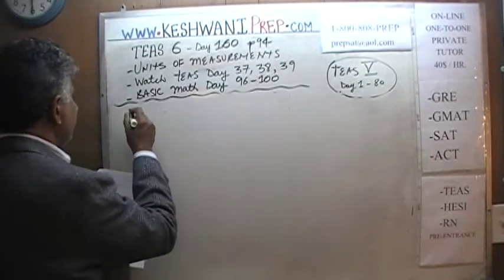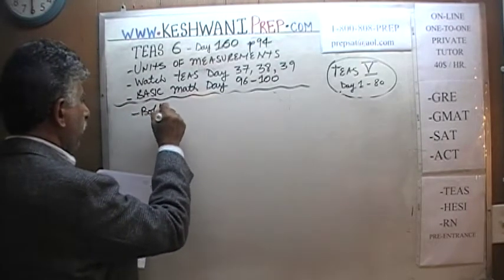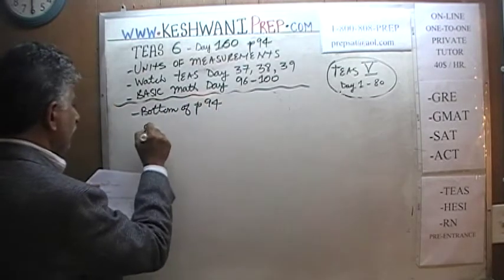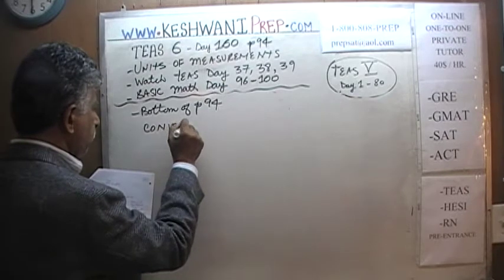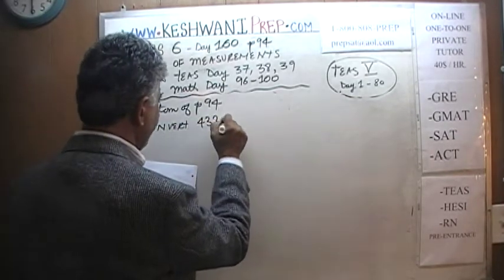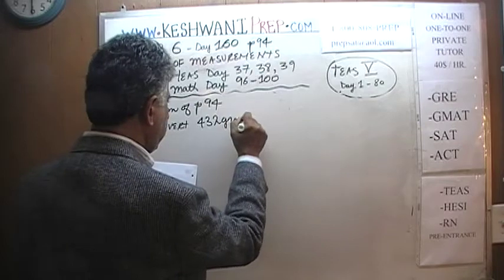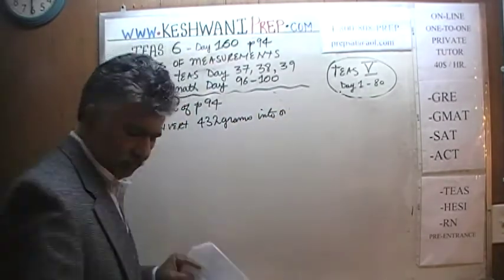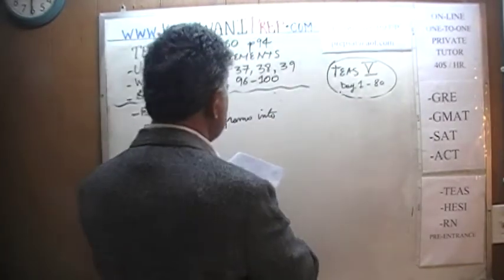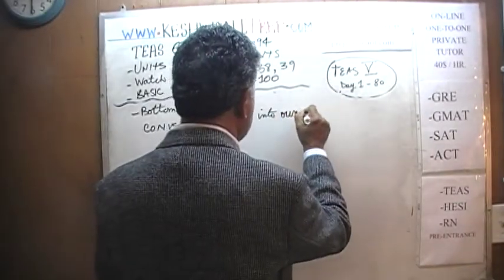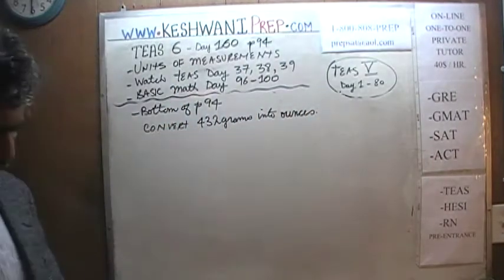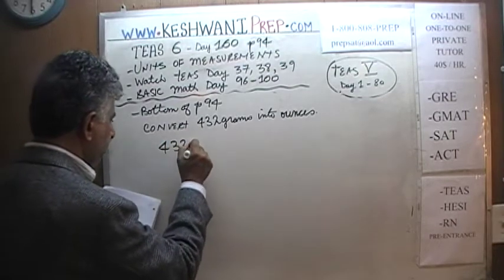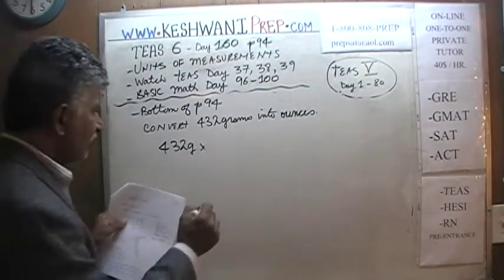Today we'll do a problem that appears at the very bottom of page 94. On the bottom of page 94, we're being asked to convert 432 grams into ounces. 432 grams is what is given to us and we're being asked to convert into ounces.